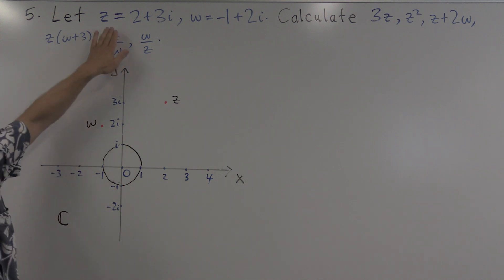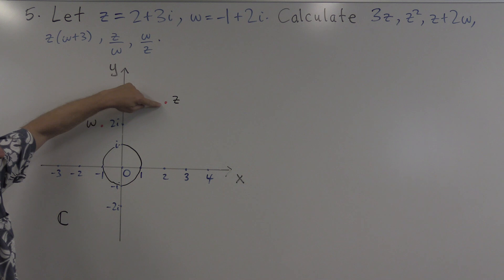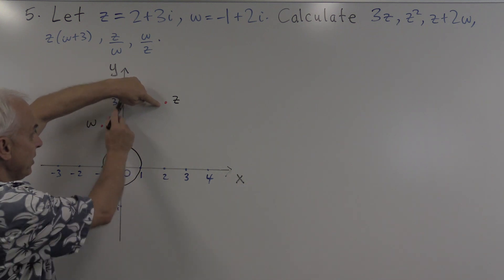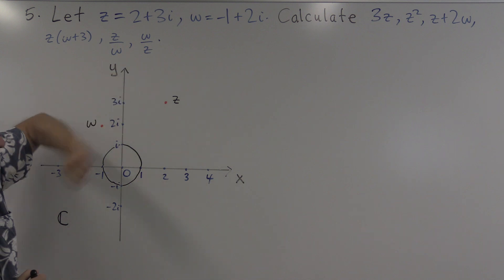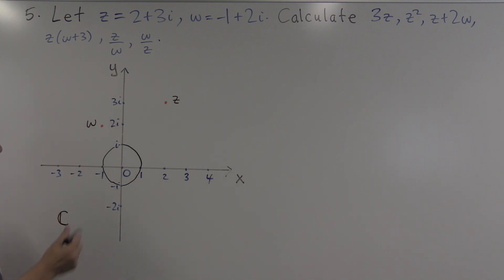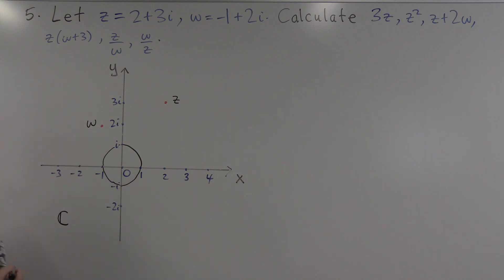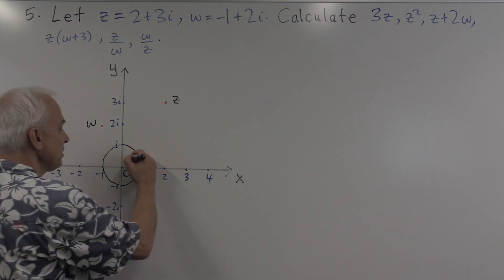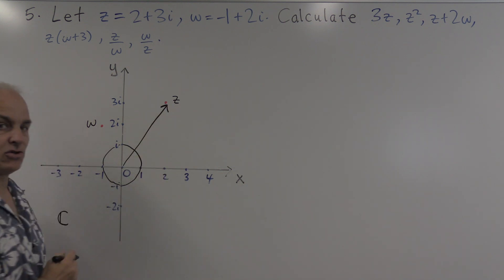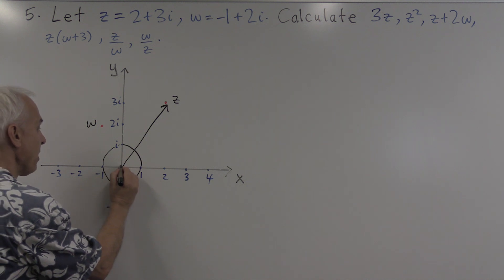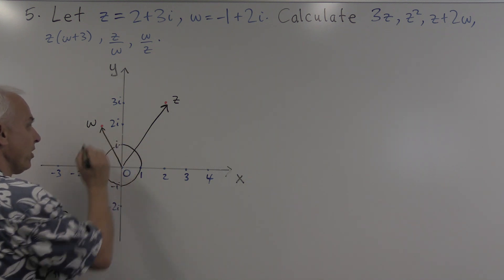The two complex numbers we're interested in: 2 plus 3i, which is z, is going to be here — 2 and 3i are its components, there it is. And w is minus 1 plus 2i, so it's minus 1 in that direction plus 2i, there it is. We often think about these complex numbers as being points, and sometimes we like to think of them as being vectors — it's another way of thinking about what a complex number is.